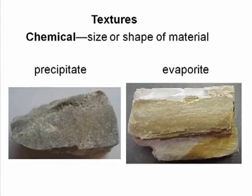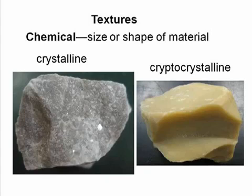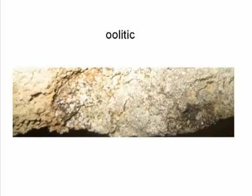The texture of chemical division sedimentary rocks depends on the size or shape of the material or particles that make up the rock. Precipitates and evaporites have three textures associated with them. The first is crystalline, composed of visible crystals — in the sample, note the crystal face reflecting the light. The second is cryptocrystalline, composed of tiny microscopic crystals. The third texture is oolitic: oolites are tiny rounded spheres that form by precipitation, and a bunch of these cemented together makes for an oolitic texture.